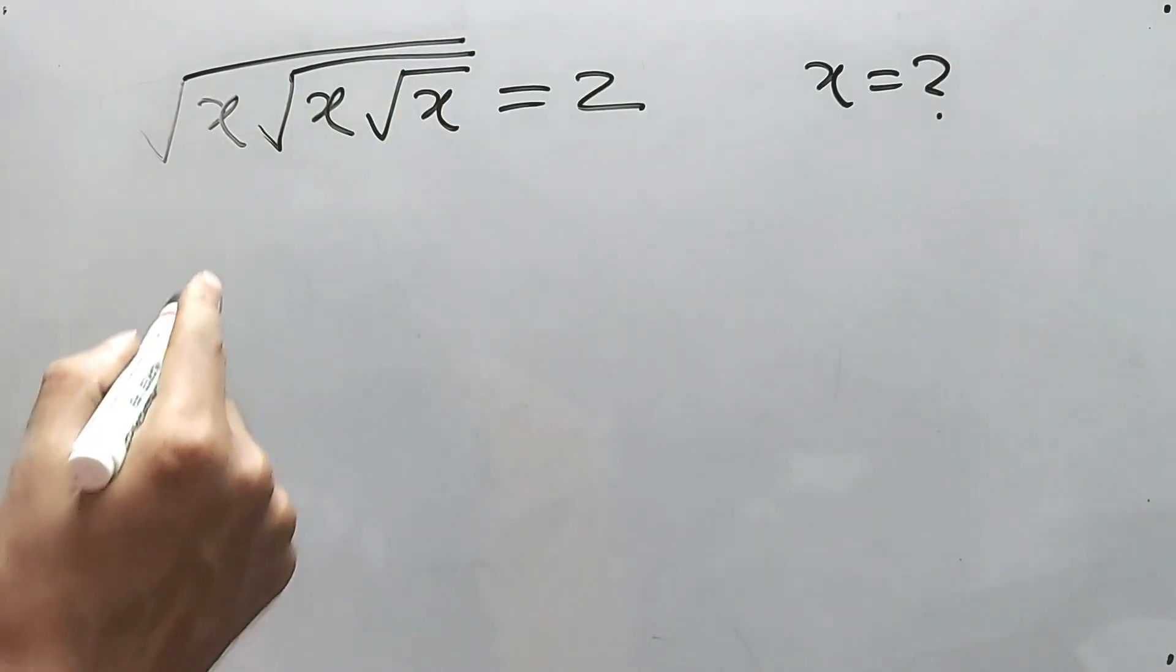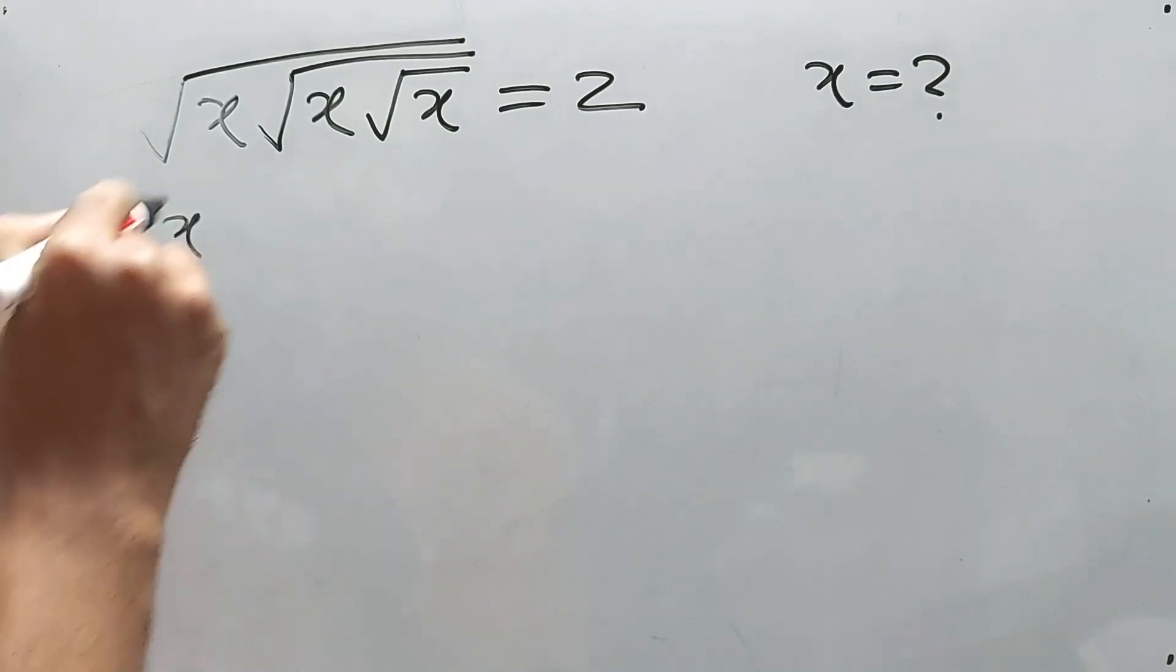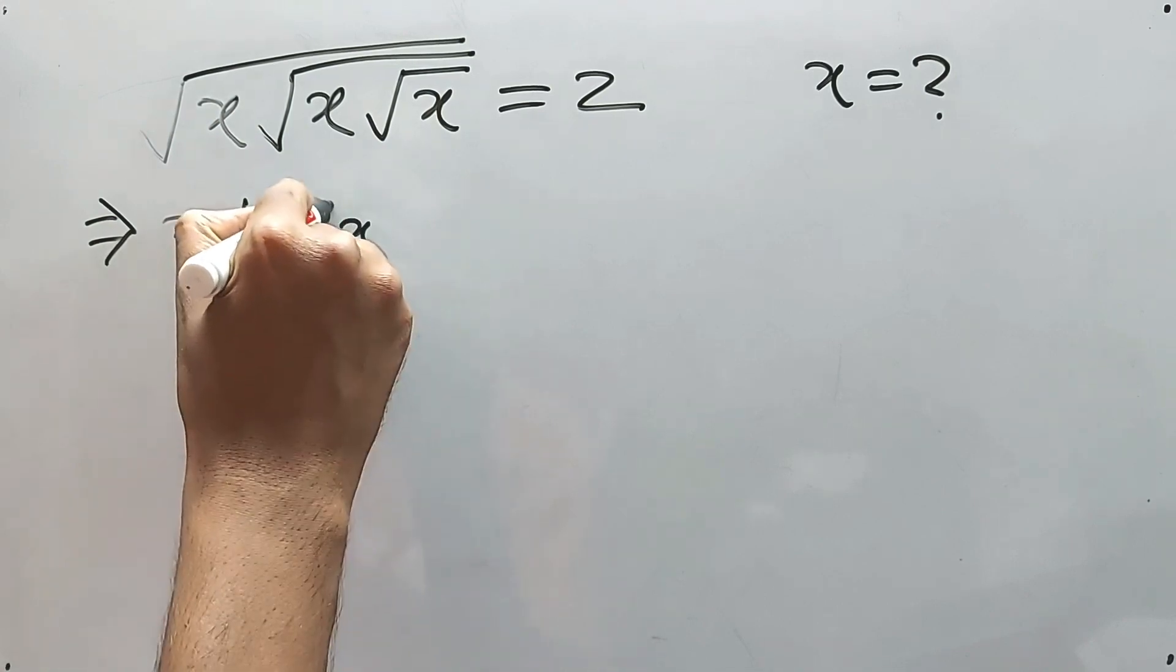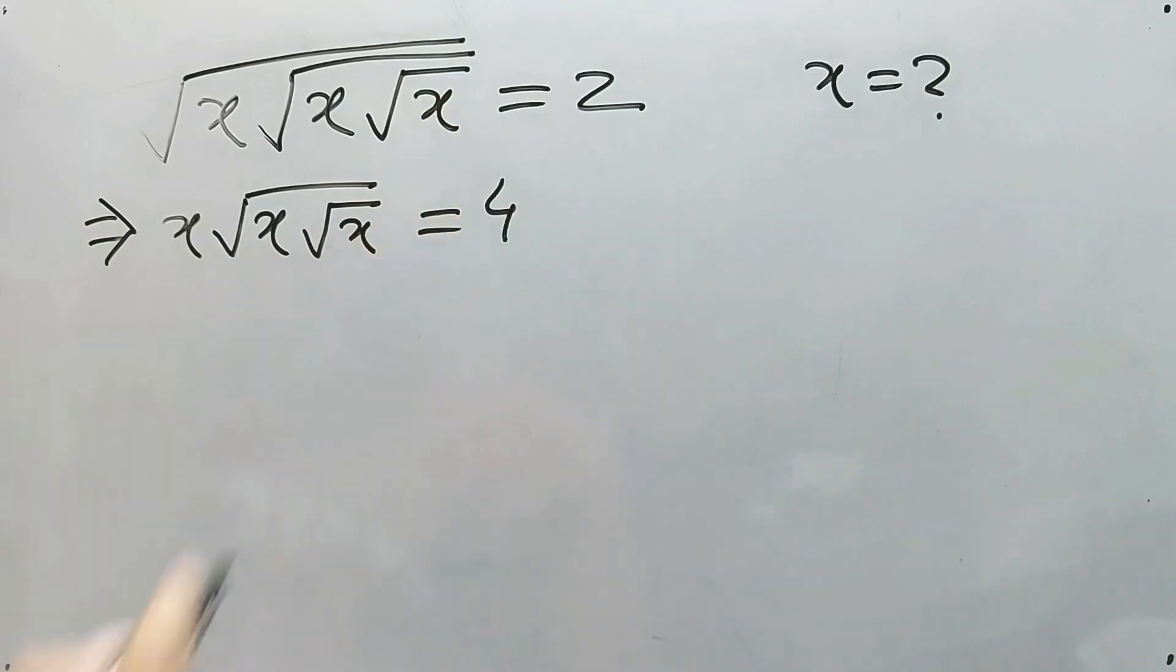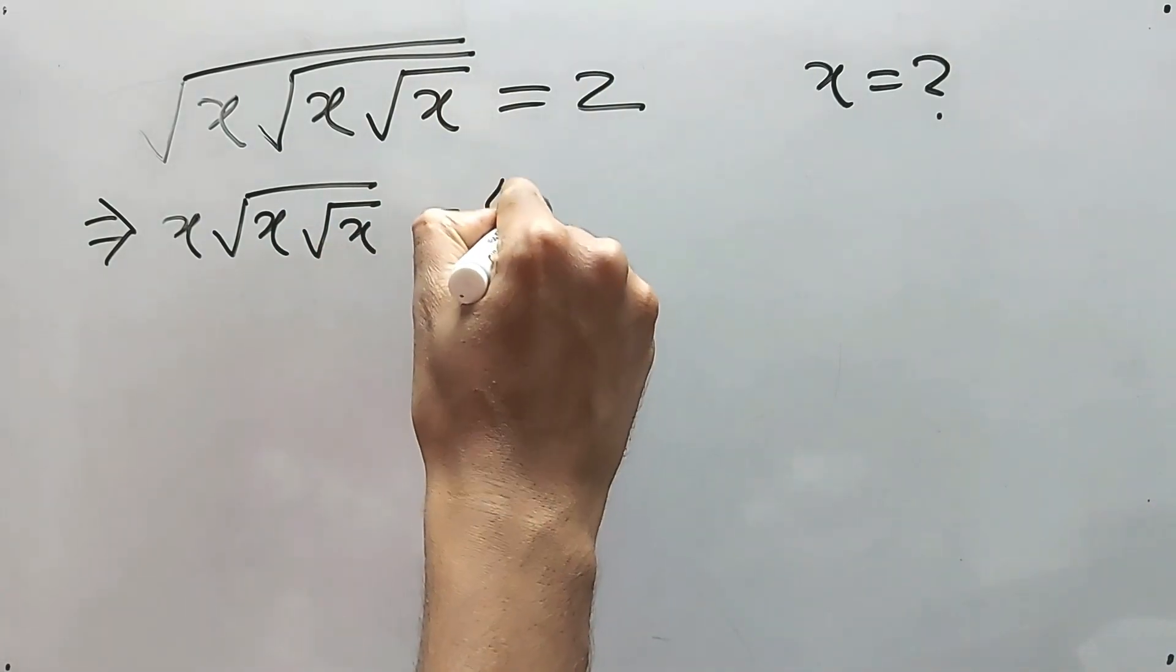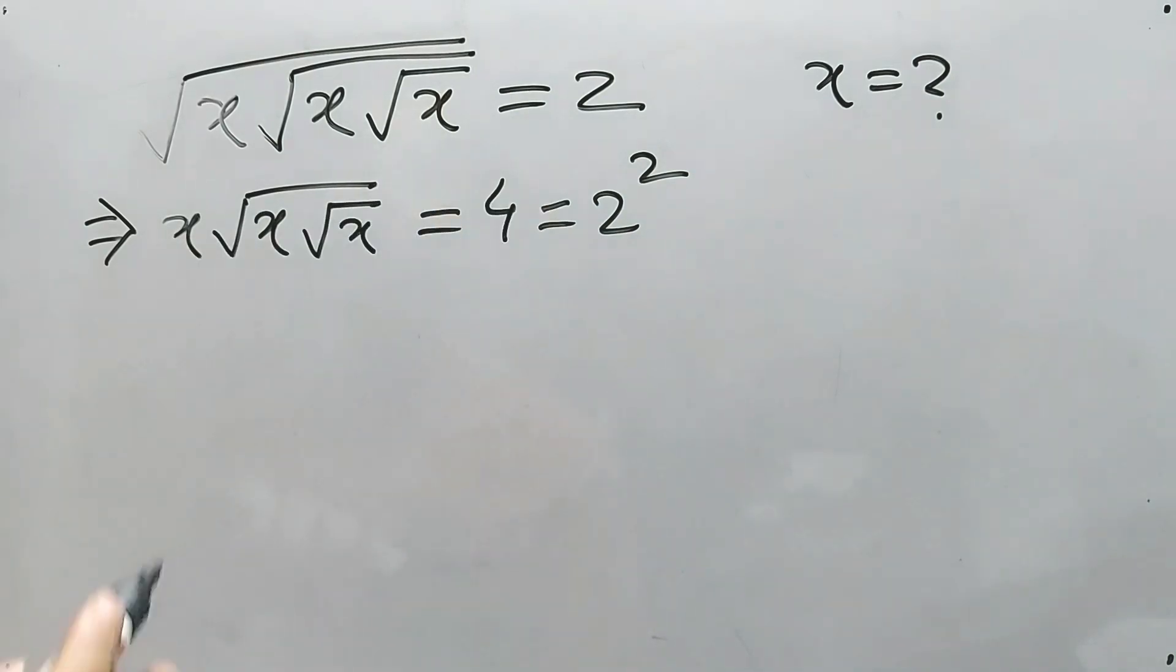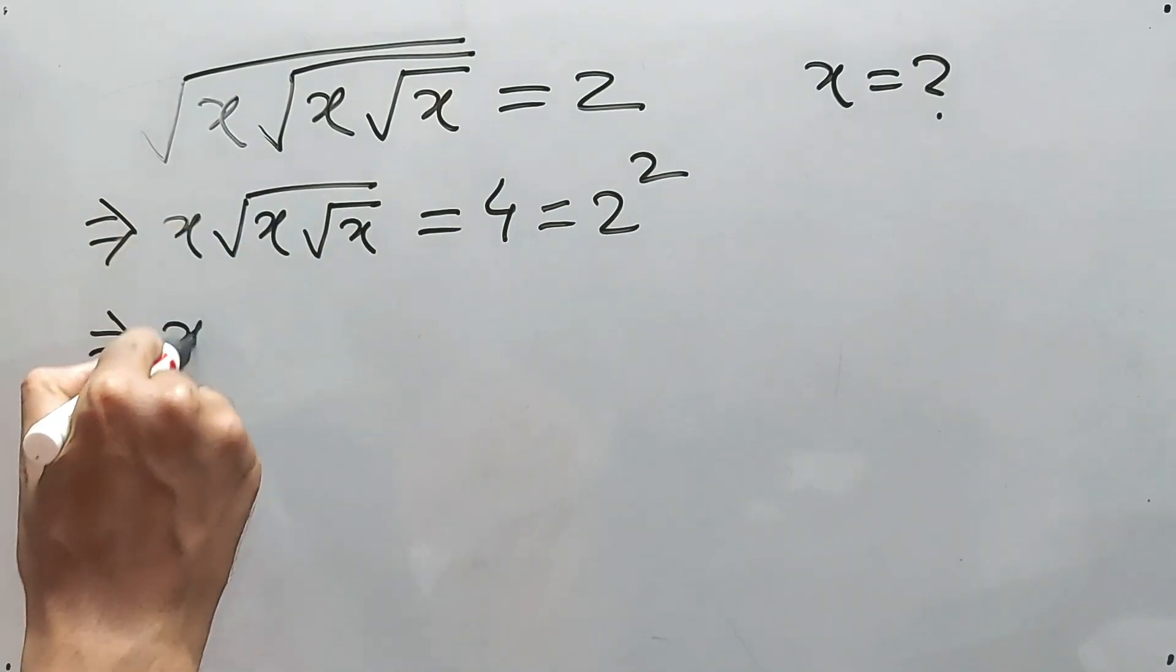We'll square it up both the sides. This x will come up but this will be inside, and this one will also be inside. This one is equal to four. Actually, we should not write four here. We'll have to write two square. This will be simplified. Now again we'll have to square it up because now this time x...